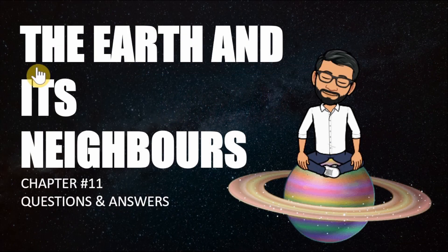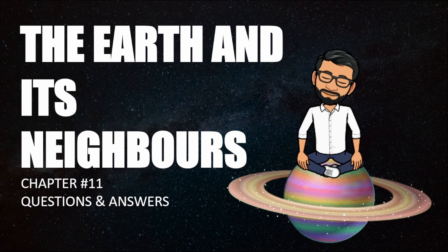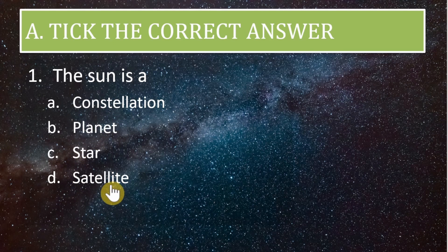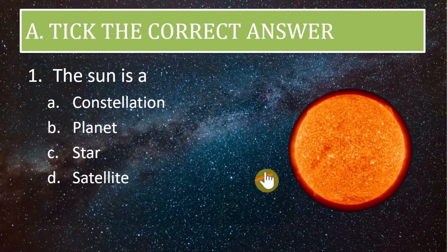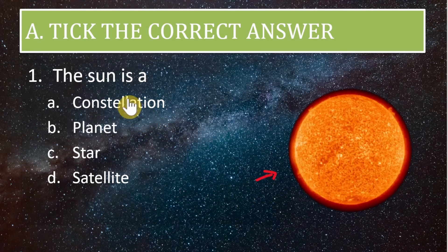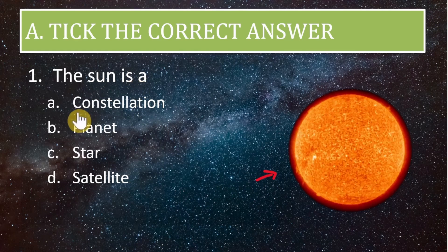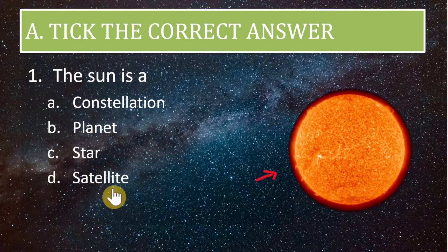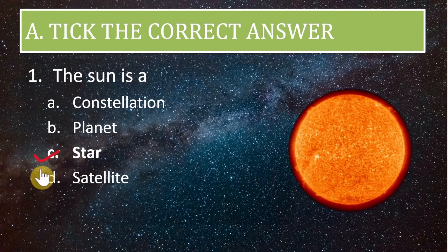Good morning students. Today's topic of discussion is questions and answers from Chapter 11, which is 'The Earth and Its Neighbors.' Let us start with 'Tick the Correct Answer.' The first question is: the sun is a constellation, planet, star, or satellite? The correct answer is star — the sun is a star.